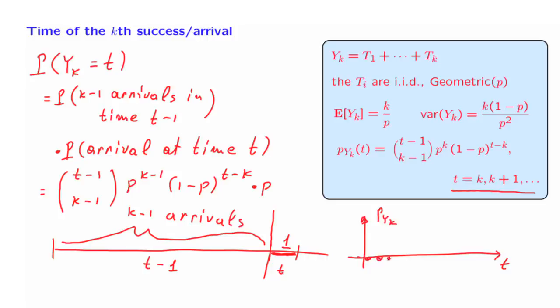So this random variable yk in general will have a pmf of this form. It's 0 for t's smaller than k. And then at time k, in general, it's going to be a positive entry. And for future values of t, it will also have positive entries. And this pmf extends all the way to infinity. Because it is possible that the k-th arrival takes an arbitrarily long time to occur.